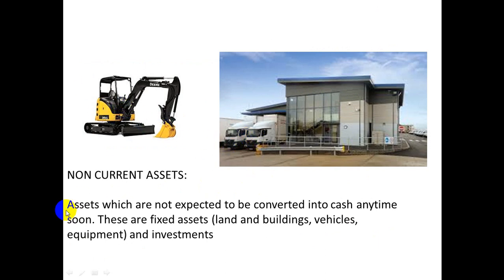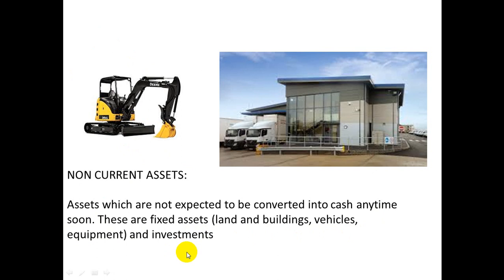Non-current assets — things like buildings, trucks, vehicles, and equipment — are assets which are not expected to be converted into cash anytime soon. You wouldn't buy one of these and want to sell it within 12 months. These are fixed assets: things like land and buildings, vehicles, equipment, and investments — things you keep for a long time that help you make money for your business.